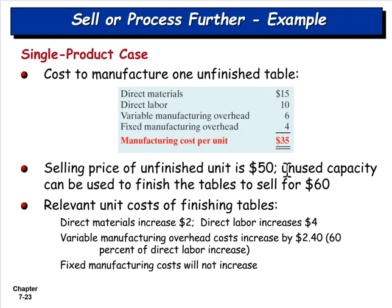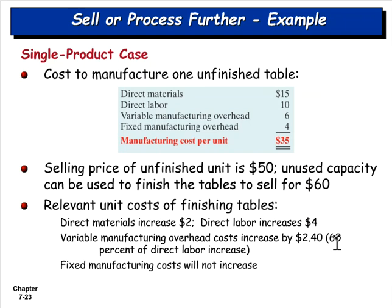The question is: they can use unused capacity to finish the tables — adding stain, varnish, or paint — and sell them for $60. The additional cost of finishing includes a $2 increase in materials, $4 increase in labor, $2.40 increase in variable manufacturing overhead, and no increase in fixed manufacturing costs. So there's a $10 increase in revenue, but it costs $8.40 in additional expenses.